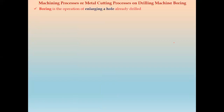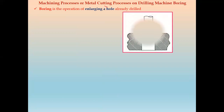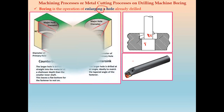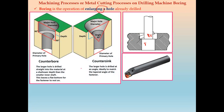Next we will see boring, counter boring, and counter sinking operations. Boring is the operation used to enlarge an already drilled hole to a different diameter. For example, if the drilled hole is 8 mm, we can enlarge it to 8.5 mm or 8.6 mm. The boring tool used is a single point cutting tool, unlike drilling and reaming tools which are multi-point cutting tools.